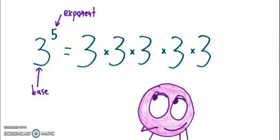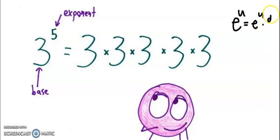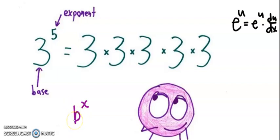So far we have worked with taking the derivative of an exponential function when the base was e. When our base was the natural base e to the u, our derivative rule resulted in e to the u times the derivative of u with respect to x. This video is going to take us through what happens when you have an exponential function with a variable in the exponent and the base is something other than e — so taking derivatives with different bases.